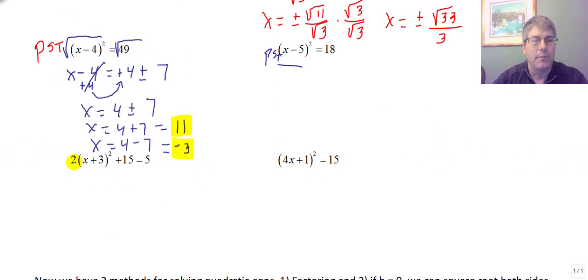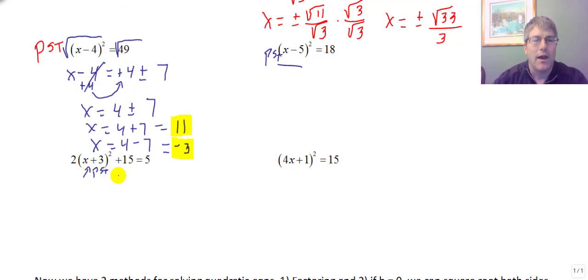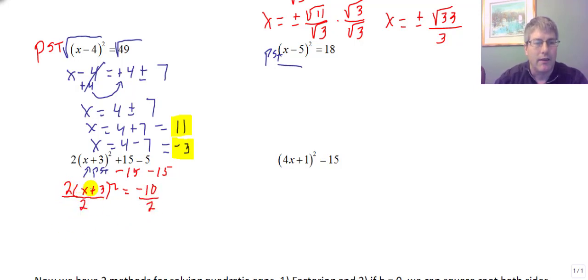The next sample problem: two times the quantity x plus three, squared, plus 15 equals 5. Again we want to clear everything away from x. We have the perfect square trinomial here, so let's clear things away from it. Subtract 15 from both sides: two times the quantity x plus three squared equals negative 10. Divide by two — we get that two out of there, since two times that whole quantity would require squaring everything first, so there's no reason to multiply it all out. We get the quantity x plus three squared equals negative five.